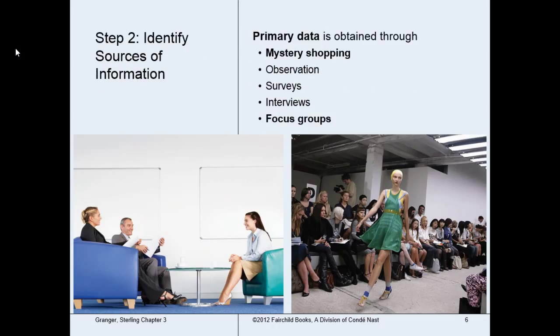Step two is where you identify the sources of information. When you look at research data, you can collect either primary data or secondary data, and you'll use this data to make and back up decisions. Primary data is data you obtain first-hand through different forms of research such as mystery shopping, observations, surveys, interviews, and focus groups. You can find more detail about each of these on page 49, box 3.2 of your textbook. In this class, we're mainly going to use secondary research because we don't have time for surveys, interviews, and focus groups.